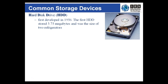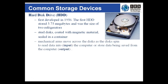Today's hard drives can be as small as two and a half inches or 10 centimeters and store gigabytes of data. The hard disk drive consists of steel disks coated with magnetic materials, sealed in a container. The read-write heads of the disk are mounted on an arm similar to the ones found on vinyl record players.